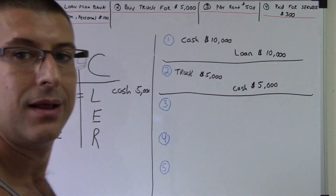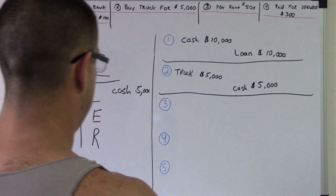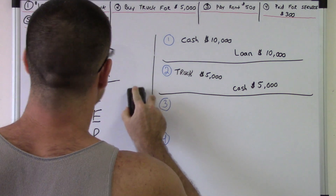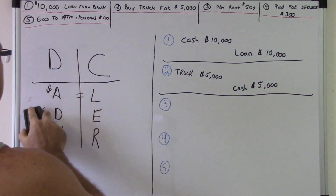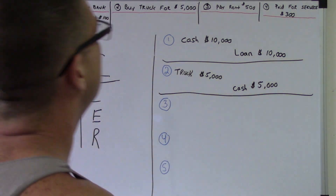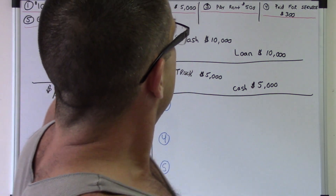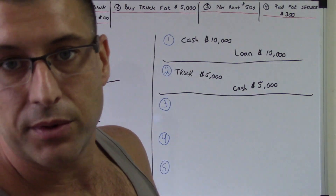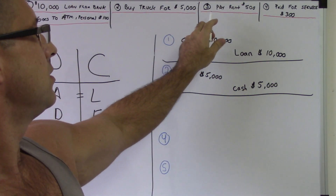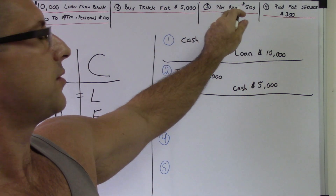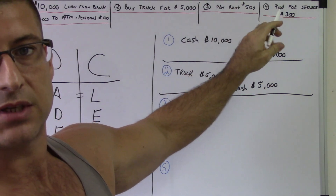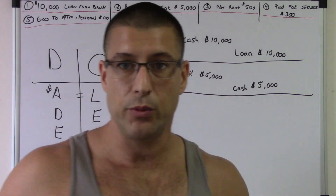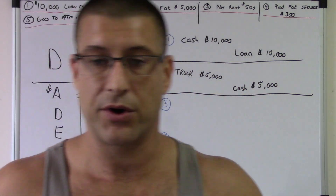Easy peasy lemon squeezy, right? This is fun. Alright, number three. Let's go to the third transaction, third journal entry: you pay rent, five hundred dollars.